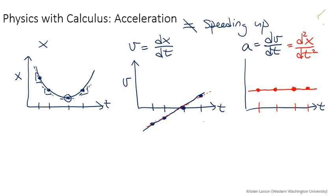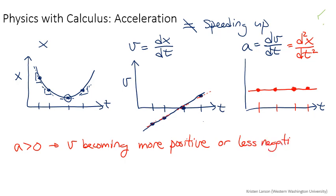And here's the part that I want you to notice now. What I want you to notice is that when a is positive, what that means is that the speed is becoming more positive, so the final value is bigger than the initial value. But I also want you to notice that it can also be less negative. That also means that the final value is bigger than the initial value.